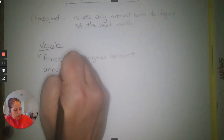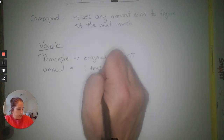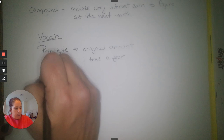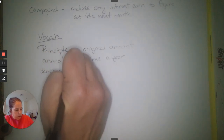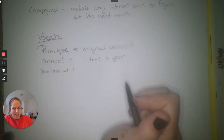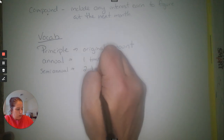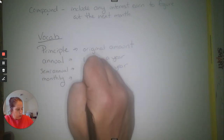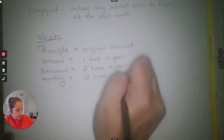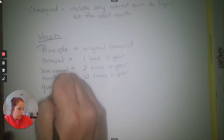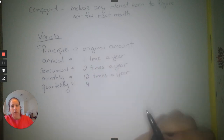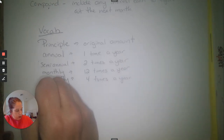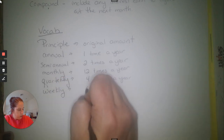A couple other words to know: 'annual' means one time a year — stores have an annual sale, meaning it only happens once a year. 'Semi-annual' is two times a year — stores tend to have more than one semi-annual sale, which makes no sense. 'Quarterly' is four times a year — four quarters in a dollar. 'Monthly' is 12 times a year.